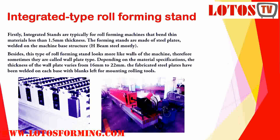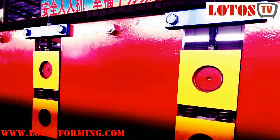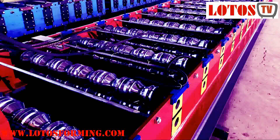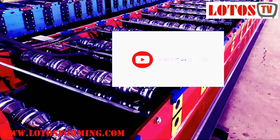Firstly, we will talk about and explain more about integrated stands. As you can see in our picture, integrated stands are typically for forming machines that bend thin material — less than 1.5mm. The forming stands are made of steel plates welded on a machine base structure such as an H-beam or any other well-linked support fabricated in our factories. This type of roll forming stand looks more like a wall of the machine.